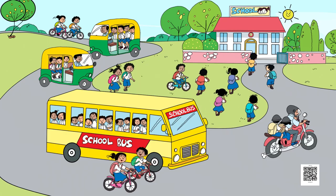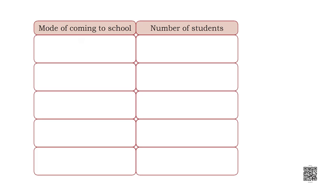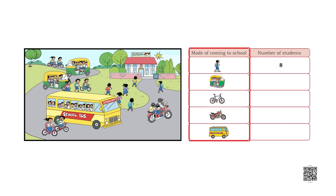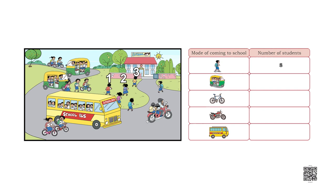Now it's time to discuss the next picture. Here is a picture of the school surroundings in the morning, in which children are coming to school in different vehicles and on foot. There is also a table divided into two parts. On the left side, the modes of coming to school are written: on foot, auto rickshaw, bicycle, motorcycle, and school bus. On the right side, the number of students is written. The number of students coming on foot is 8 — let us count and verify: 1, 2, 3, 4, 5, 6, 7, 8.